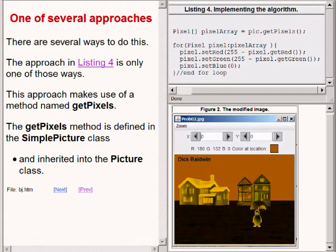One way is to deal with each pixel in terms of its horizontal coordinate and its vertical coordinate. We won't use that approach in this lecture because we don't need to differentiate between pixels on the basis of their coordinate values.